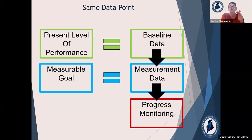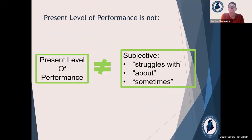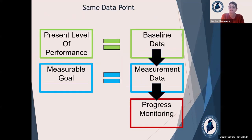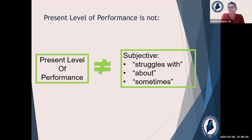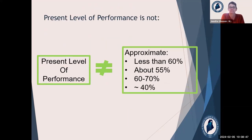Your baseline data — you're using that same data point for your measurement data and that same data point for your progress monitoring. Baseline data, measuring your goal, progress monitoring: all the same data point. Let's talk about what present level is not. It is not subjective — words like 'struggles with,' 'about,' 'sometimes,' 'often' — you don't want to use these words in your present level because your present level is baseline data. And it's not approximate: 'less than 60,' 'about 55%,' '60 to 70' — no ranges, no 'approximately.' Be really confident in your data and put that specific data point in there.